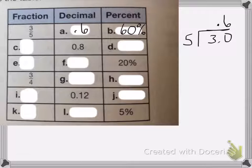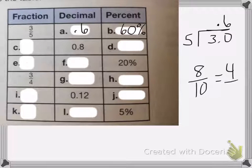On C, I have 0.8. So that means for the fraction, it's going to be 8 tenths, which reduces down to 4 fifths. So C is 4 fifths.